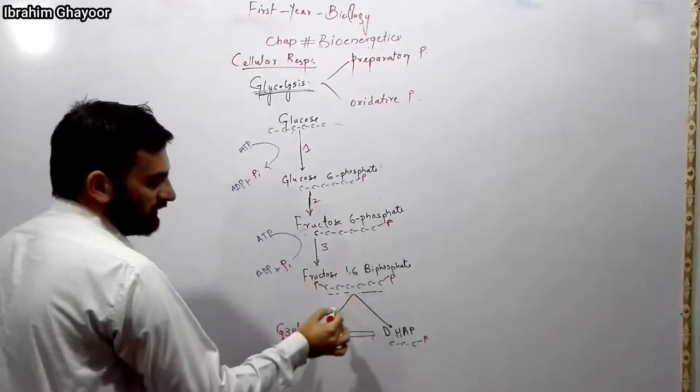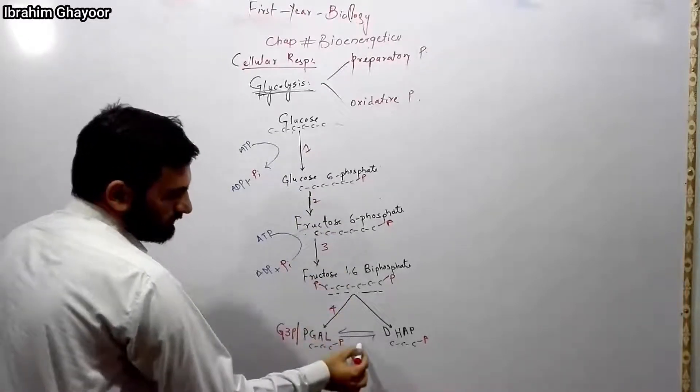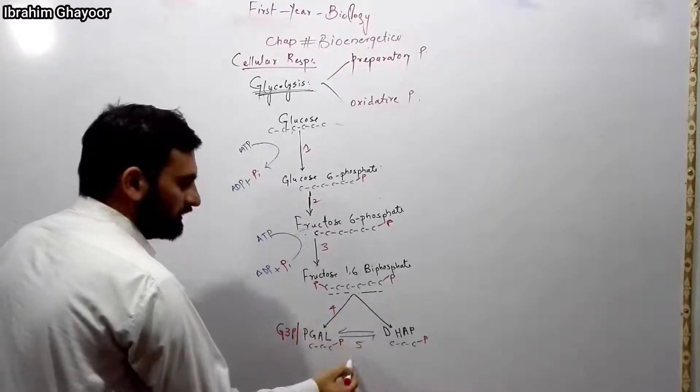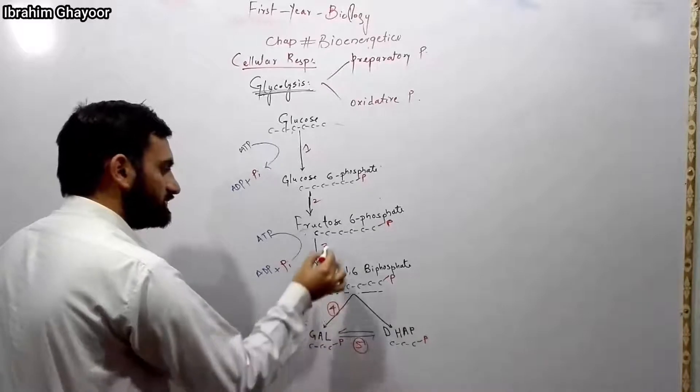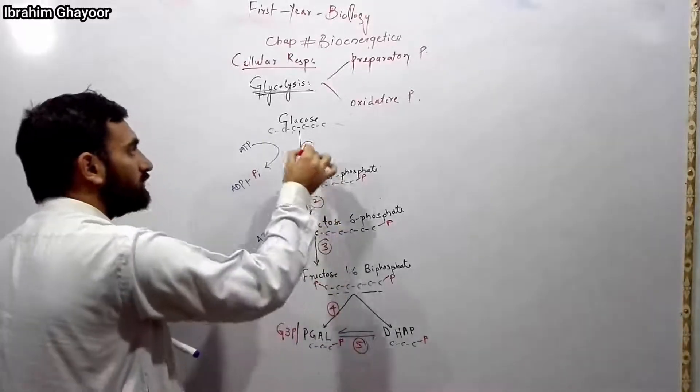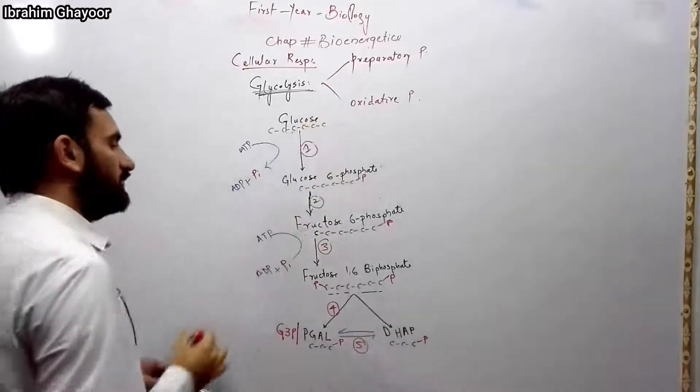Steps 1 through 4 constitute the preparatory phase, and step 5 is the cleavage producing PGAL. The process now moves into the oxidative phase.